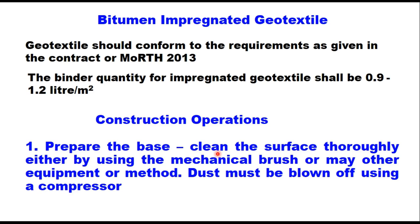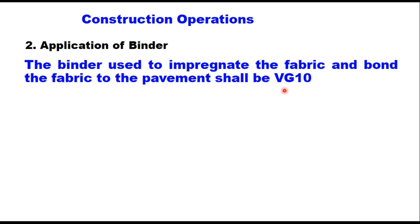For construction operations, the first step for all types of crack relief layer is to prepare the base — clean the surface thoroughly using a mechanical brush or other equipment, and blow off dust using a compressor. For the granular layer, further construction steps are the same as for any granular base layer like wet mix macadam. For non-aggregate crack relief layers, the next step is application of binder using equipment and procedure as per the manual for construction of bituminous mixes.